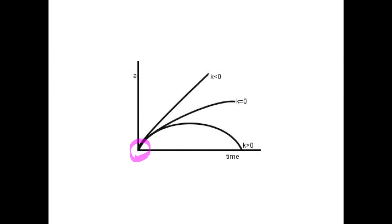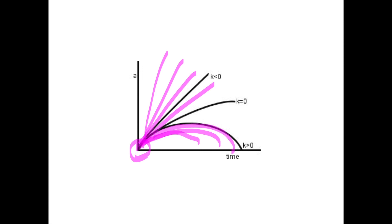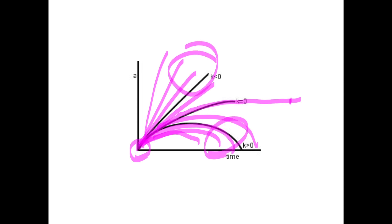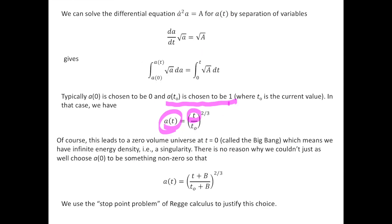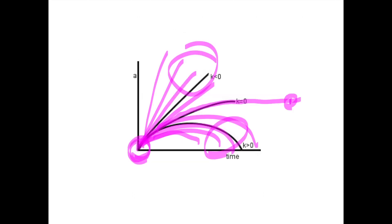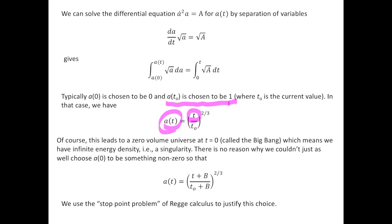When you look at all the solutions for the three different shapes — here are your saddle shapes, here are your sphere shapes — you get all these possible solutions. And you have just this one solution corresponding to the flat case. It seems to be the case that our cosmology follows the flat case, and that's called the flatness problem: when you have all these choices otherwise, why does our universe follow so nicely just the flat case? You can get rid of the singularity at t equals 0 by choosing A to be non-zero at t equals 0, as we do with the stop-point problem in Regge calculus, but I'll leave that for our book to explain.